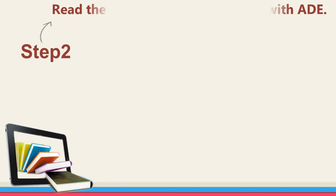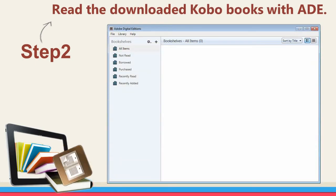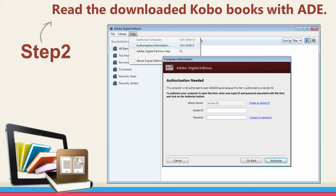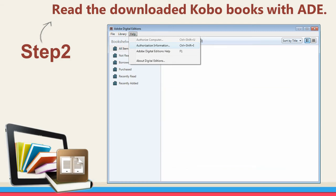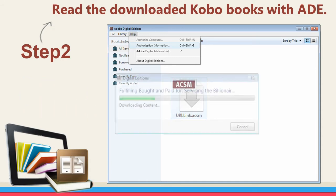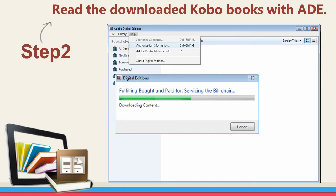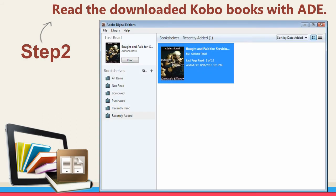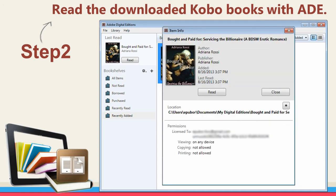Step 2: Read the downloaded Kobo Books with ADE. Launch ADE. The first time you run ADE, you will be asked to authorize your computer with your Adobe ID. Click to create an Adobe ID if you don't have one. Drag the downloaded ACSM file to ADE. A downloading content window will be displayed, and the ePub version of the book will be downloaded during this period. When the download is complete, the book will be opened automatically. Click the library button in the top left corner to go back to library mode. Right-click the item on the right-hand panel and choose "Show item in folder" to find the book location. Books synced with ADE will be stored under the My Digital Editions folder by default.